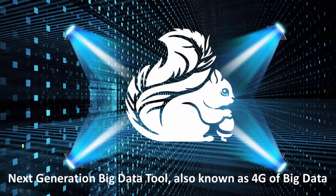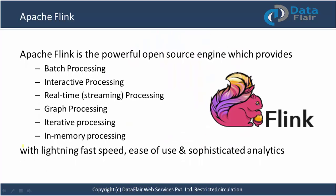Apache Flink is also known as the 4G of big data. It is a powerful open source engine which provides batch processing, interactive processing, real-time stream processing, graph processing, iterative processing, and in-memory processing — it can handle all these types of requirements on a single unified platform, with lightning fast speed, ease of use, and sophisticated analytics.